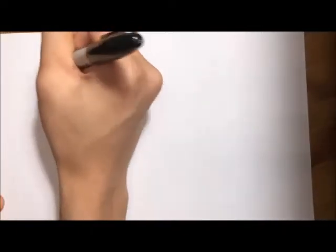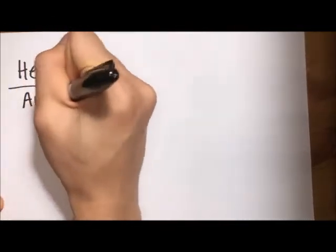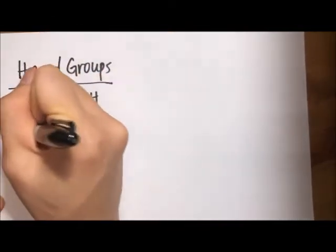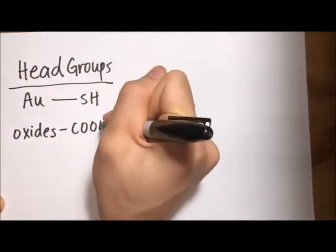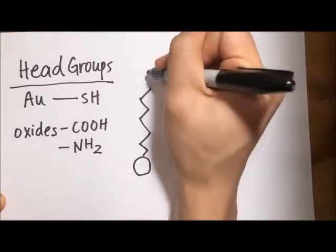More specifically, common adsorbates which serve as the head of the SAM are thiols, which commonly bind to metallic or semiconductor substrates, such as gold, silver, or platinum, while carboxylic acids or amines are used to bind to oxide layers.